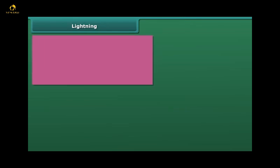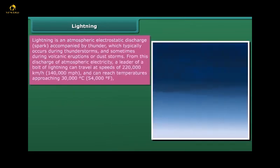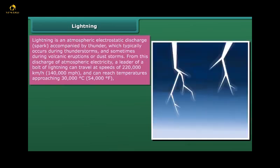Lightning: Lightning is an atmospheric electrostatic discharge, or spark, accompanied by thunder, which typically occurs during thunderstorms and sometimes during volcanic eruptions or dust storms. From this discharge of atmospheric electricity, a leader of a bolt of lightning can travel at speeds of 220,000 km per hour and can reach temperatures approaching 30,000 degrees Celsius, or 54,000 Fahrenheit.